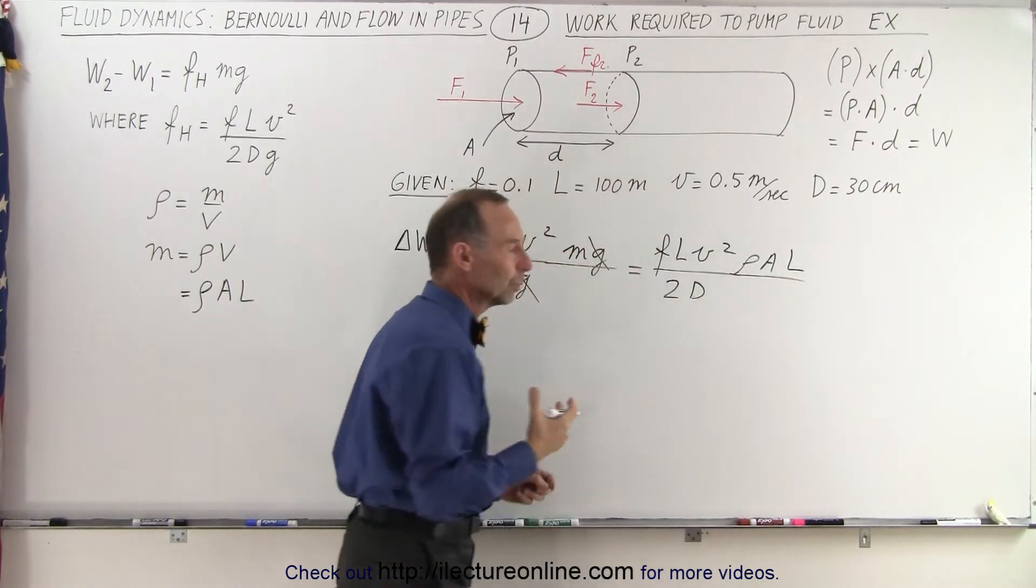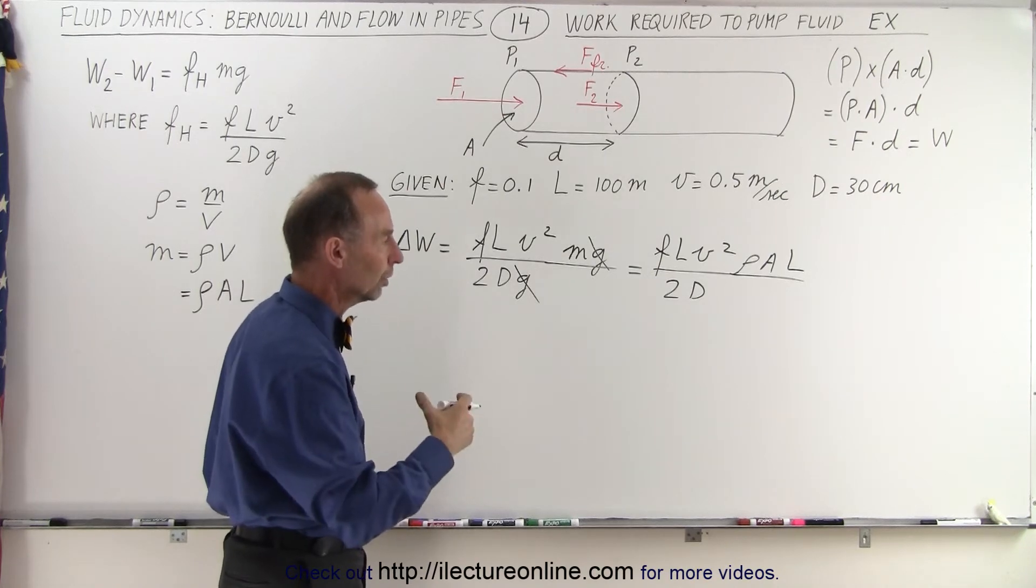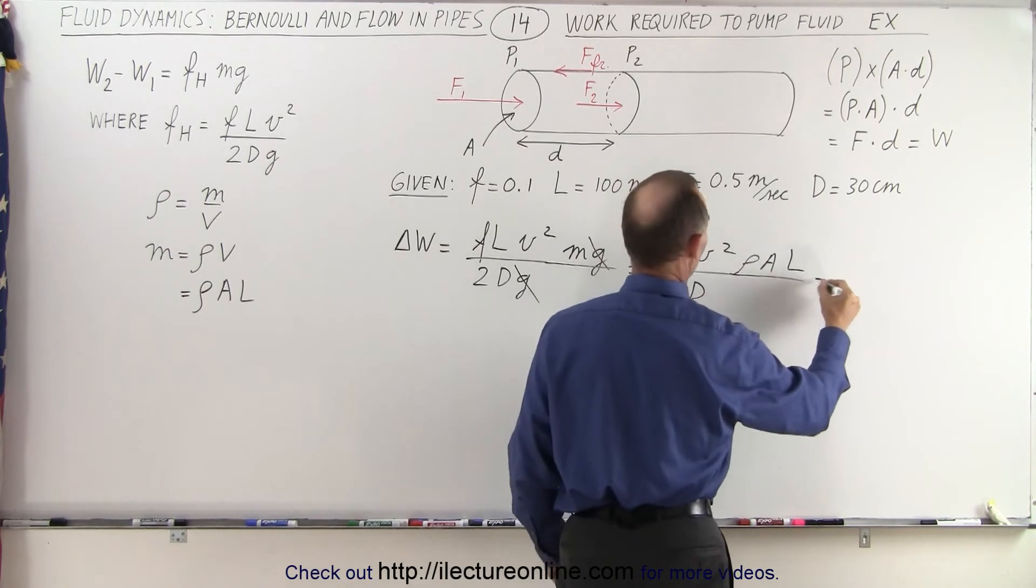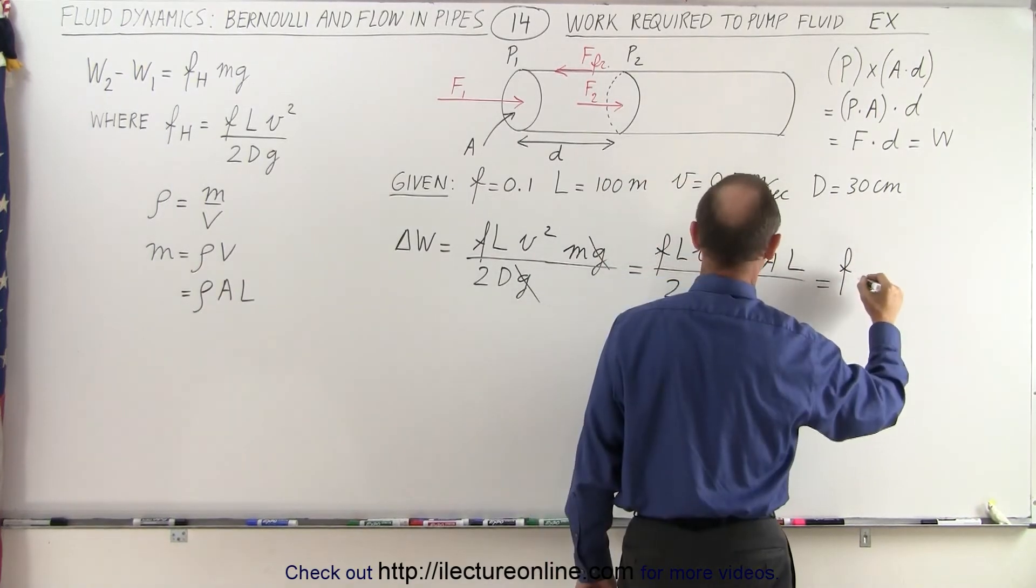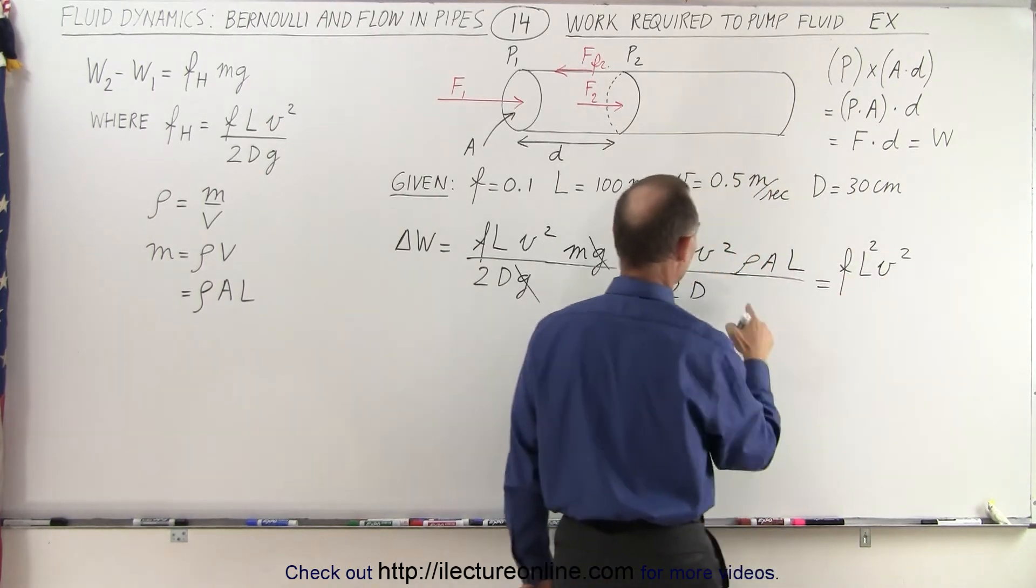So now we end up with length squared, the area, well that could be D squared over 4, right? That would be the cross-sectional area of our circle, so we can write this as the fraction times L V squared times L, so that would be L squared.